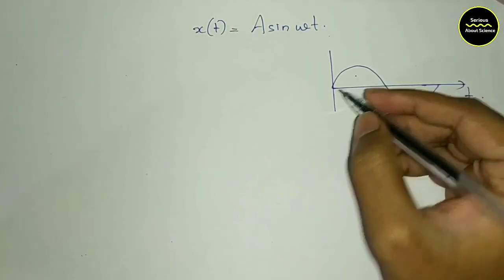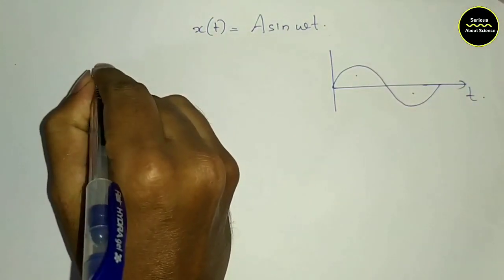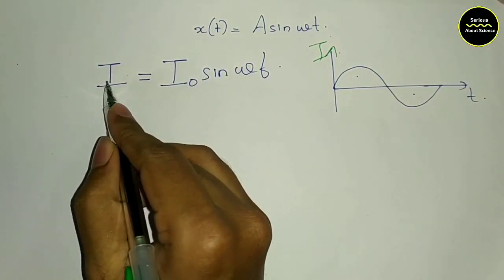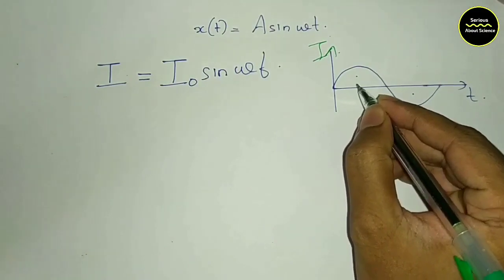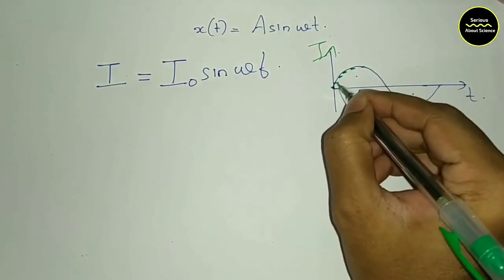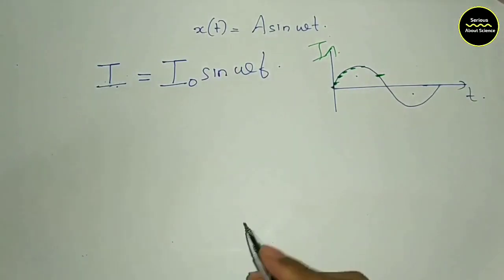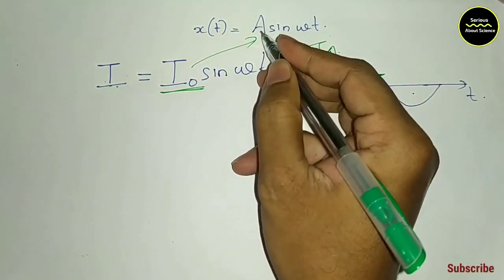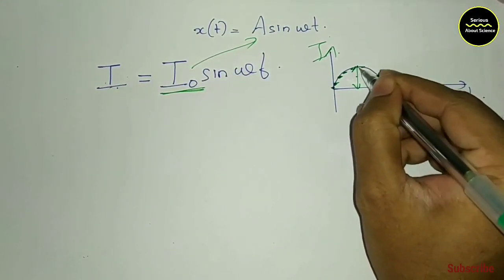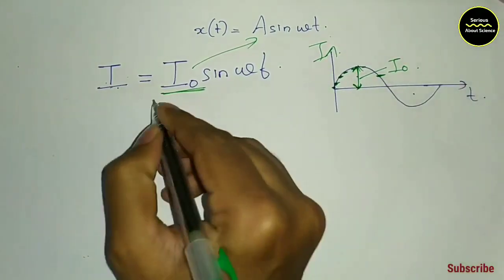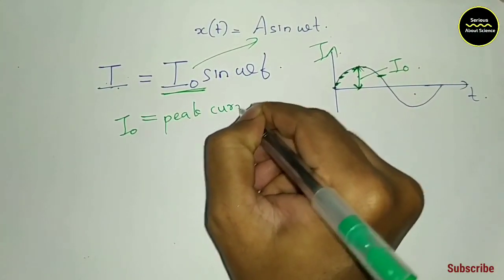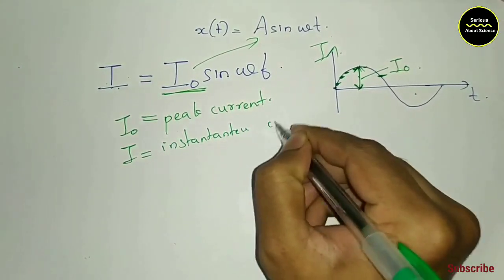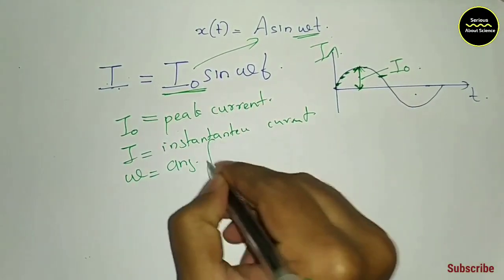We will learn the current and EMF wave equations. Alternating current wave equation: I will be equal to I₀ sin omega t. I is the instantaneous value of current. I₀ is the peak current, also called maximum current. I is called instantaneous current — the value at one point. Omega is called angular frequency.